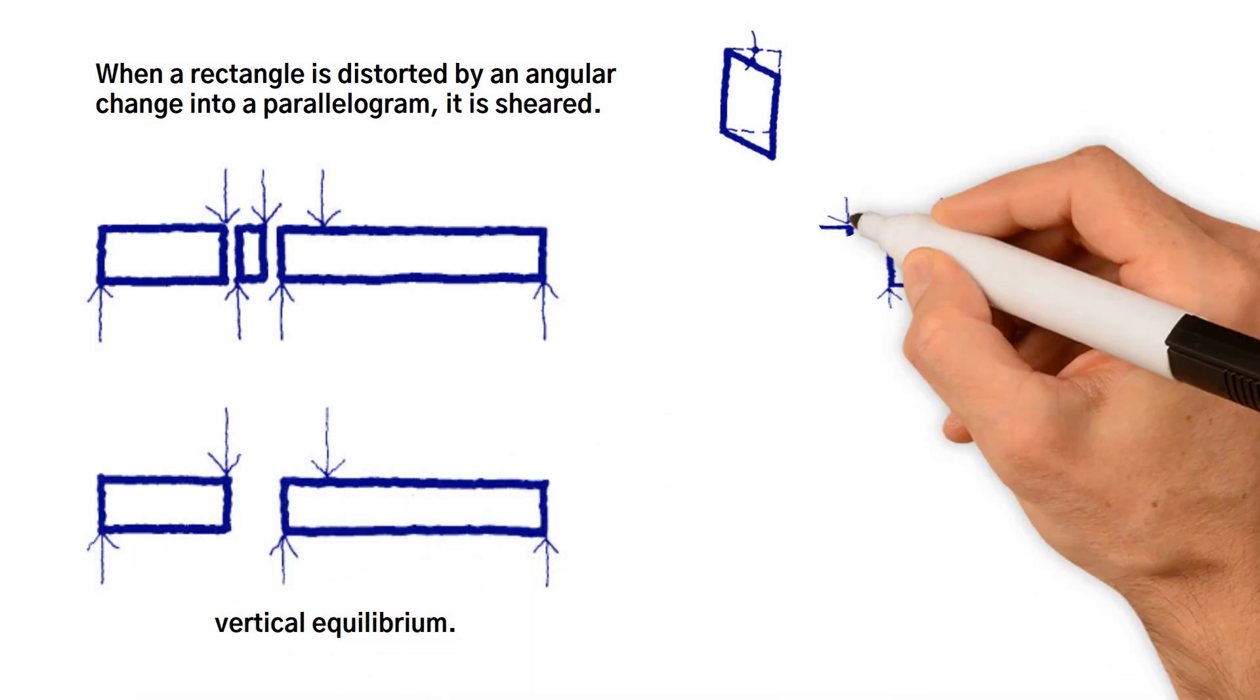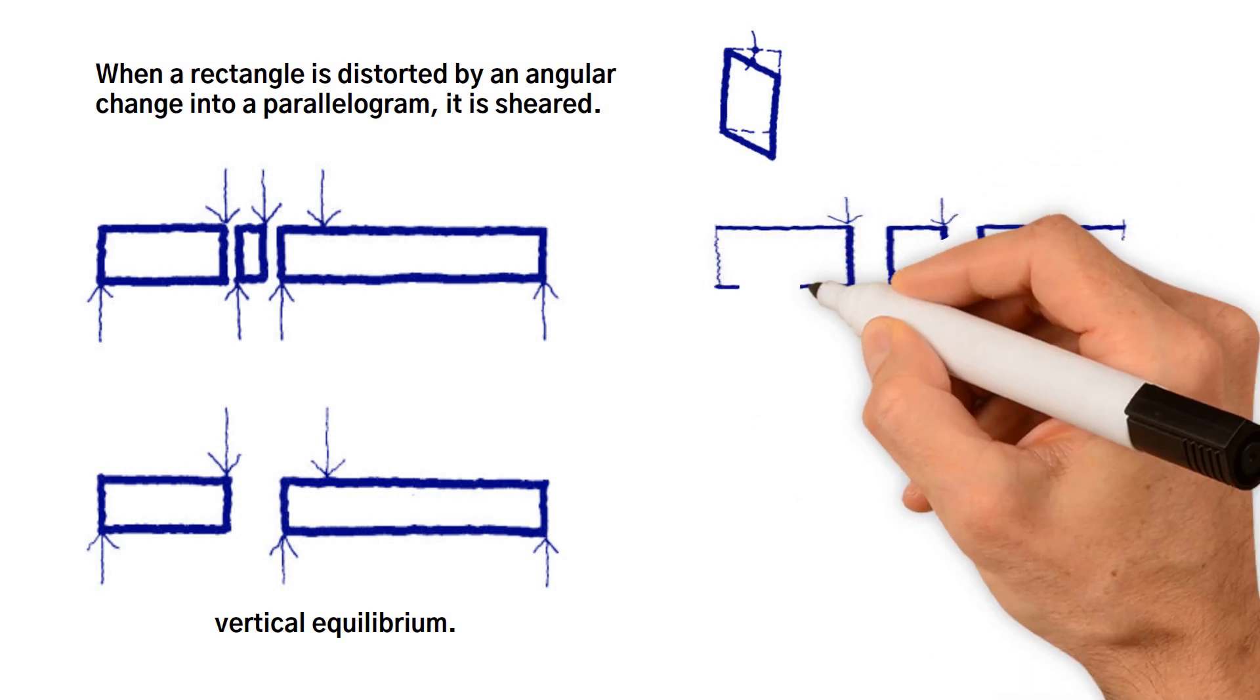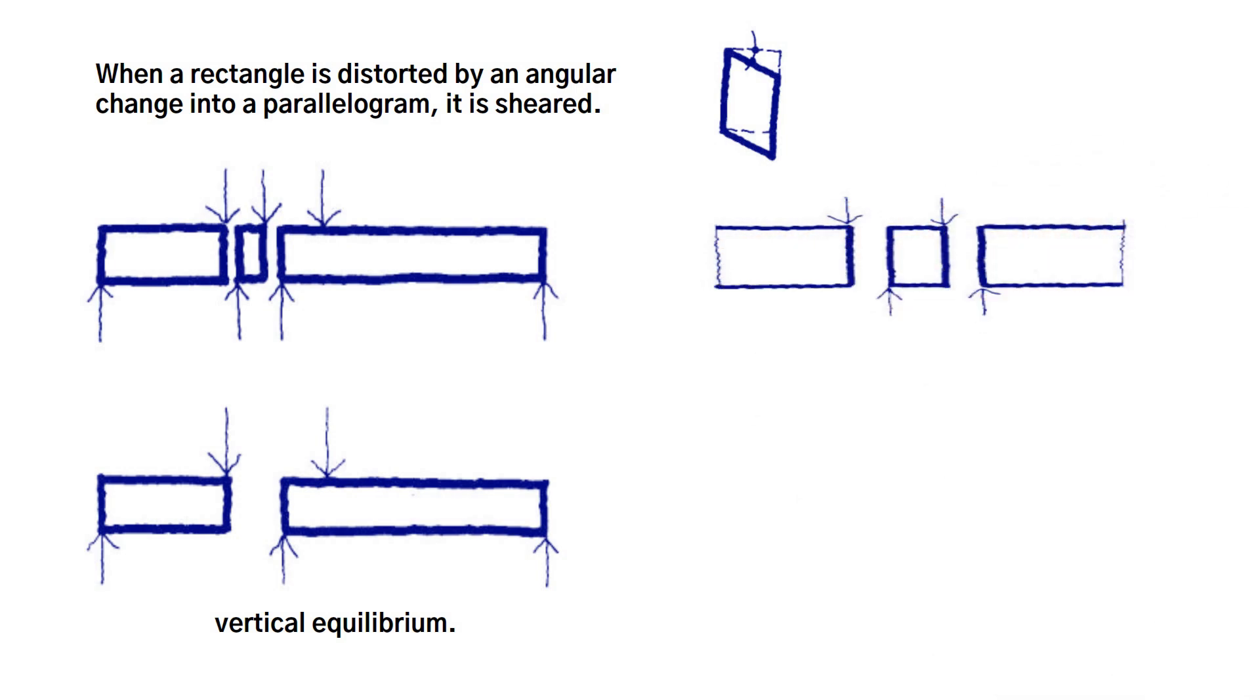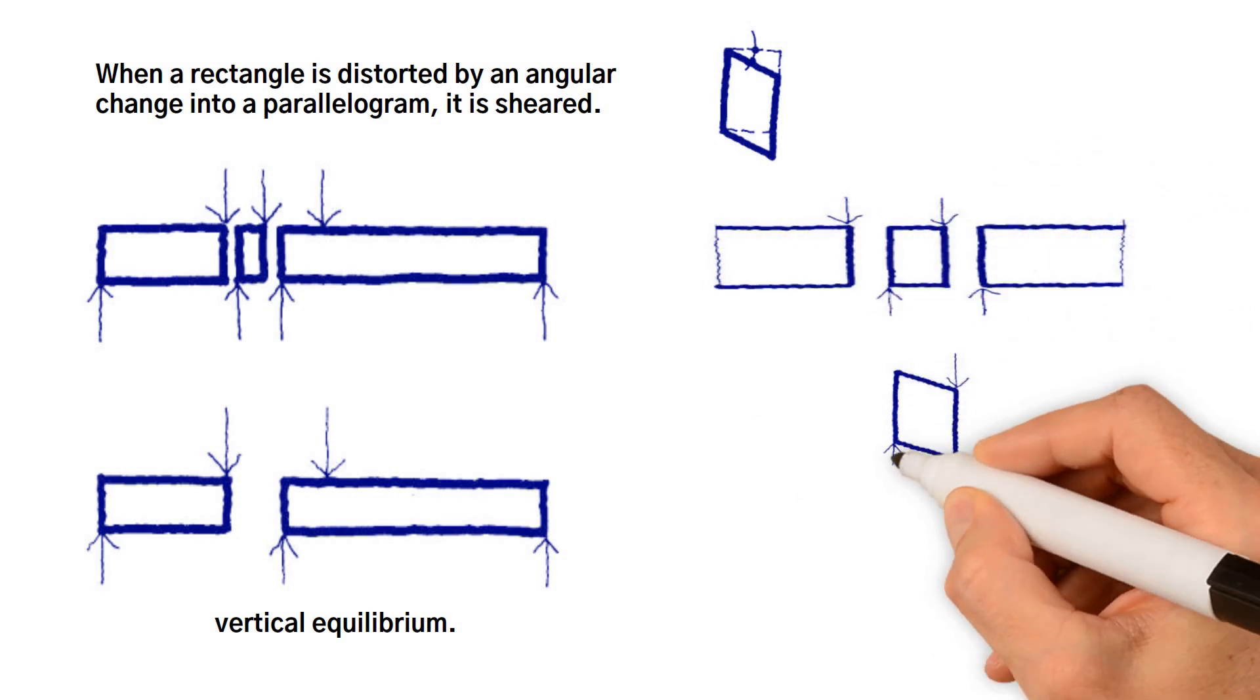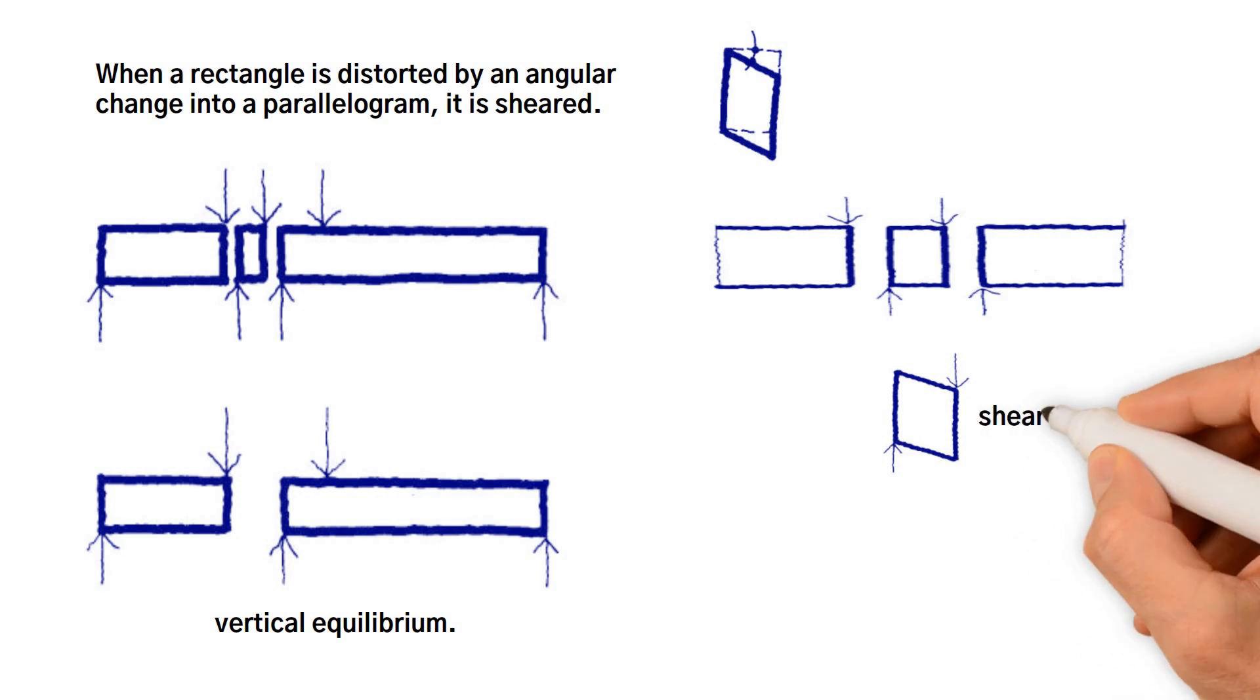And the balancing forces themselves have to be balanced by forces on the face of the slice. It is these pairs of up and down forces that are called shear forces, because their effect is to shear the slice.